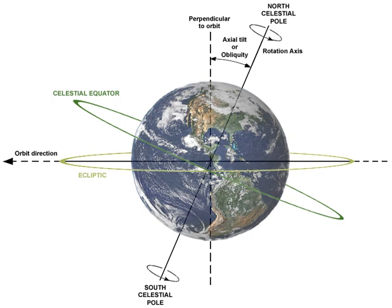Epsilon equals 23 degrees 26 minutes 21.448 seconds minus 4680.93T minus 1.55T² plus 1999.25T³ minus 51.38T⁴ minus 249.67T⁵ minus 39.05T⁶ plus 7.12T⁷ plus 27.87T⁸ plus 5.79T⁹ plus 2.45T¹⁰, where here T is multiples of 10,000 Julian years from J2000.0. These expressions are for the so-called mean obliquity, that is, the obliquity free from short-term variations.